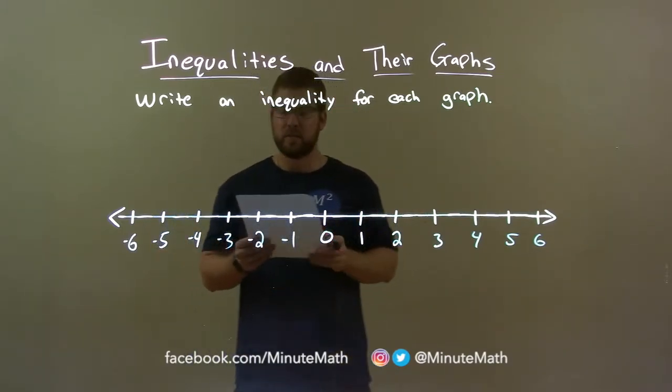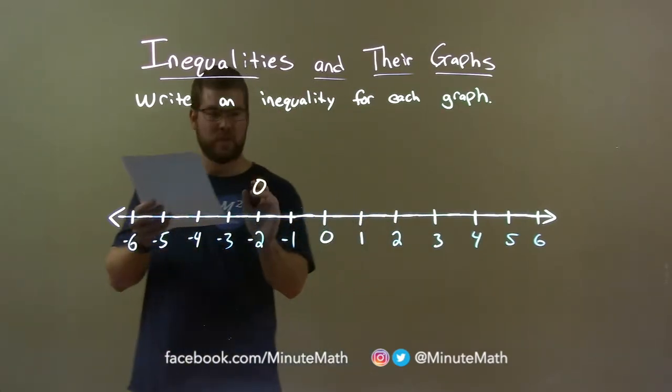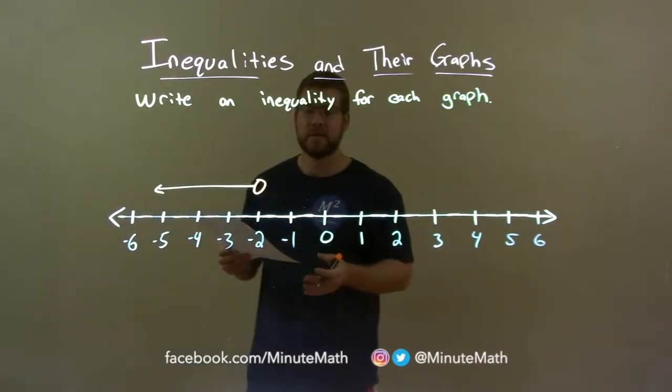Let's say I was given this graph. At negative 2, we got an open circle and it's shaded to the left here. So what does this graph mean as an inequality?